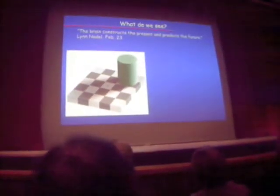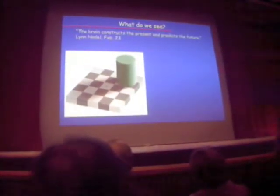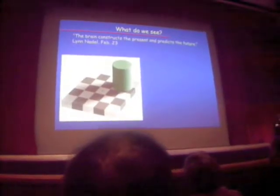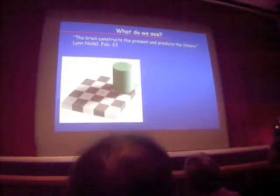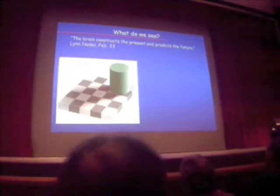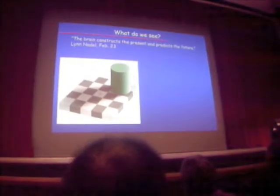This is an optical illusion. Some of you will have seen it. What you're looking at here — what does it look like? It looks like a checkerboard of dark gray and light gray squares with a green object casting a shadow.